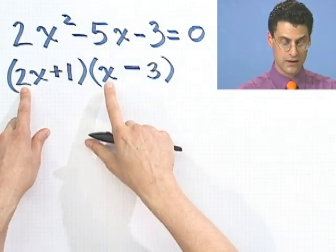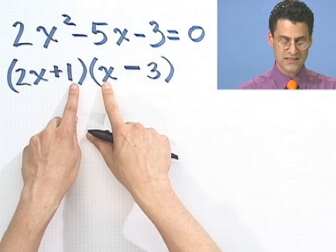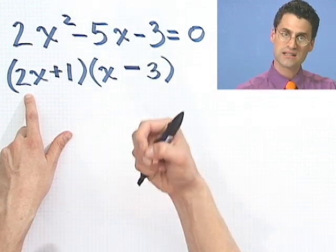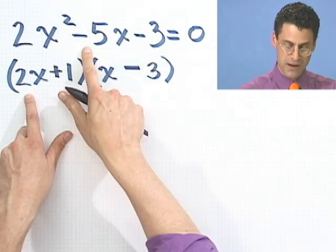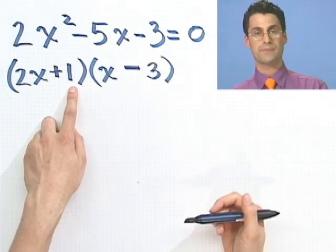Let's check and make sure that I'm really okay. 2x times x is 2x squared. Great. The inside term is an x. The outside term is a minus 6x. Minus 6x plus x is minus 5x. So that checks, and the last times the last gives me a minus 3. I'm okay.